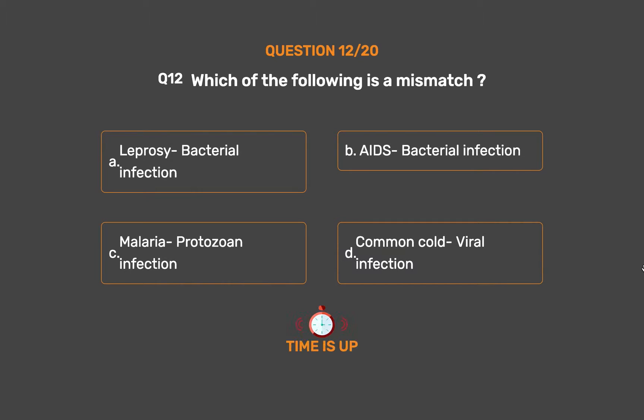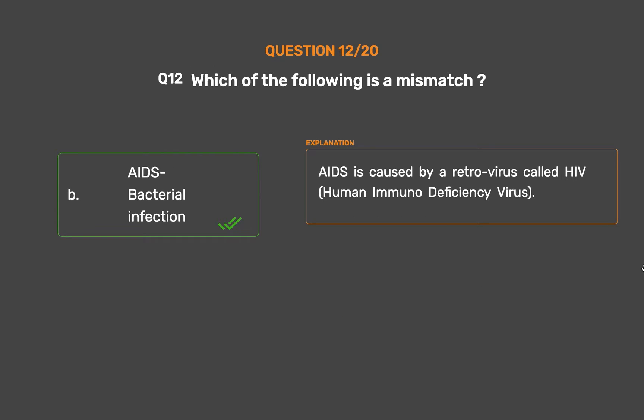The correct answer is Option B: AIDS — bacterial infection. AIDS is caused by a retrovirus called HIV, human immunodeficiency virus.